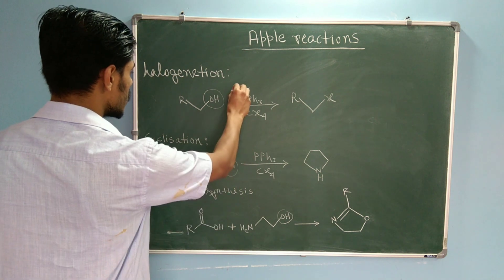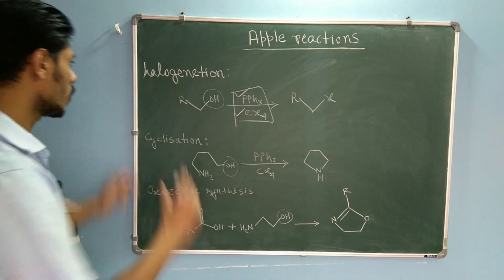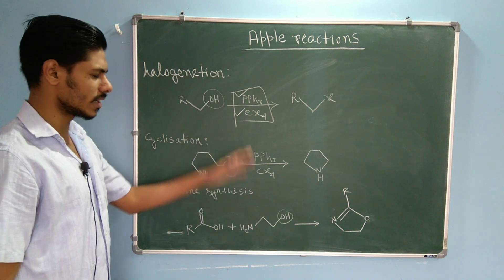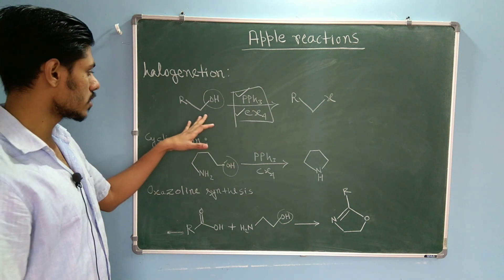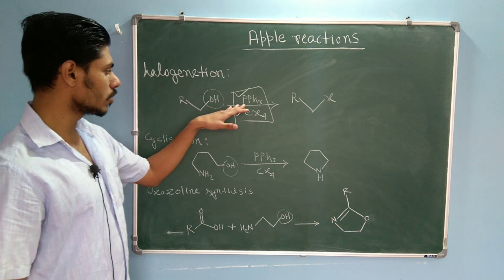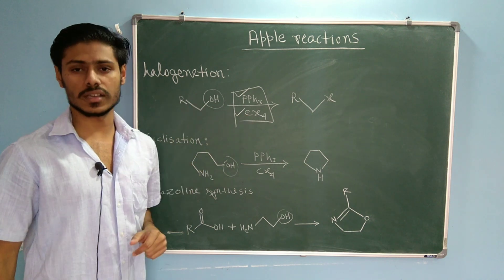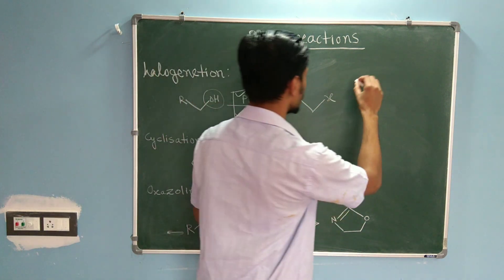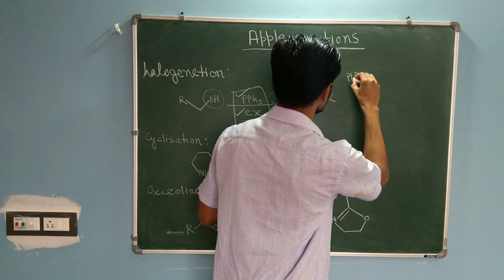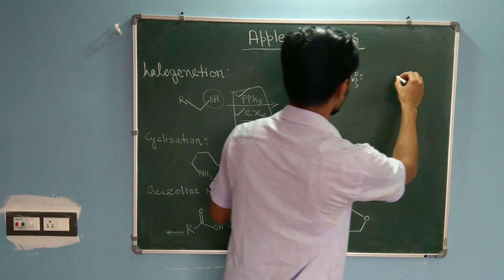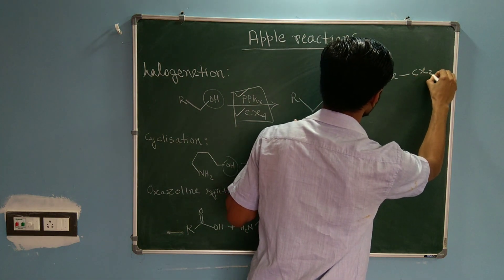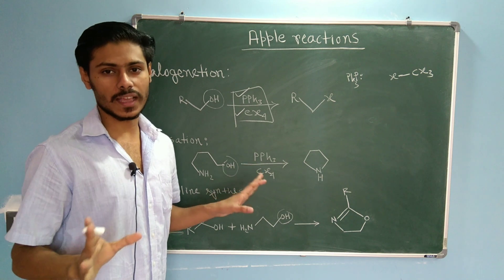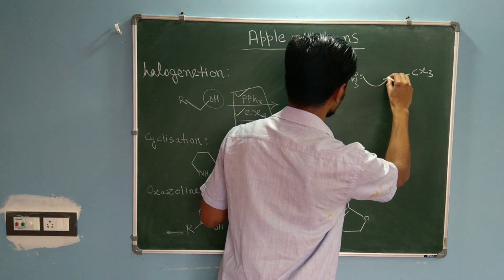The first step is very simple. In the Halogenation reaction, you have the alcohol, Triphenylphosphine, and Carbon Tetrahalide. The alcohol cannot react with either Triphenylphosphine or CX4 directly, so we need an active reagent. Recalling the Corey-Fuchs reaction: Triphenylphosphine has a lone pair on phosphorus, and in CX4 the halogen atom — chlorine, bromine, or iodine — has a vacant d-orbital.